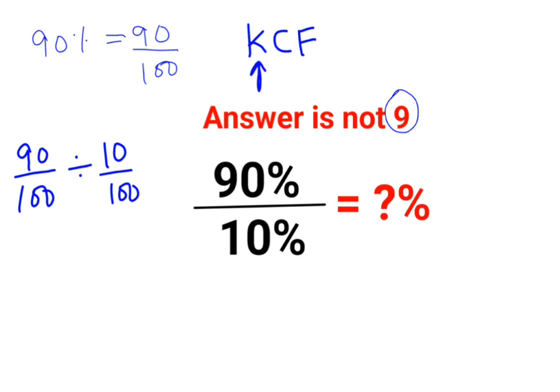where K stands for keeping the first number as it is. C stands for changing the division sign to multiplication. F stands for flipping or taking reciprocal of 10 upon 100, which is 100 upon 10.